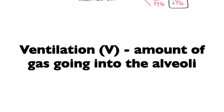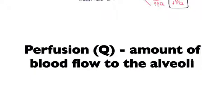In this video we're going to talk about pulmonary circulation, ventilation, and perfusion. Ventilation is essentially the amount of air traveling into your alveoli ready for gas exchange. Perfusion is the amount of blood flow going into the alveoli, thus prepared for gas exchange as well. Ventilation is abbreviated V and perfusion is abbreviated Q.